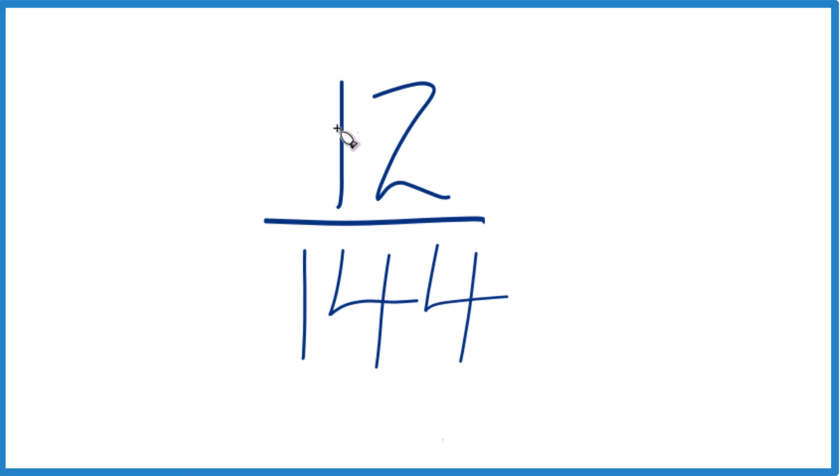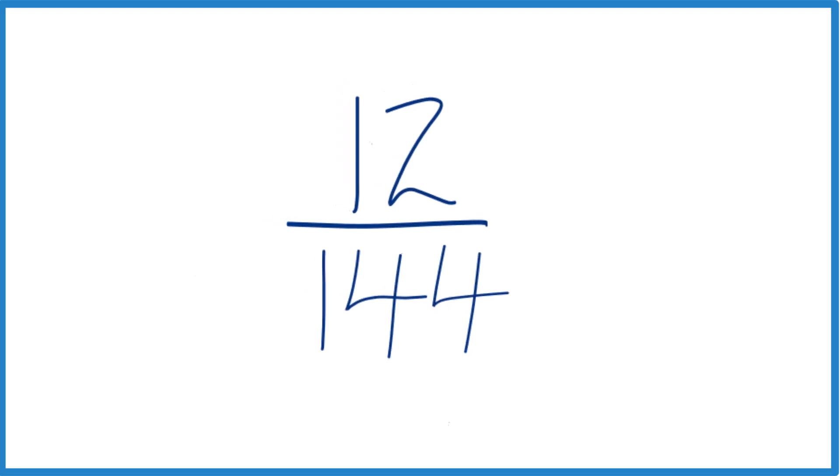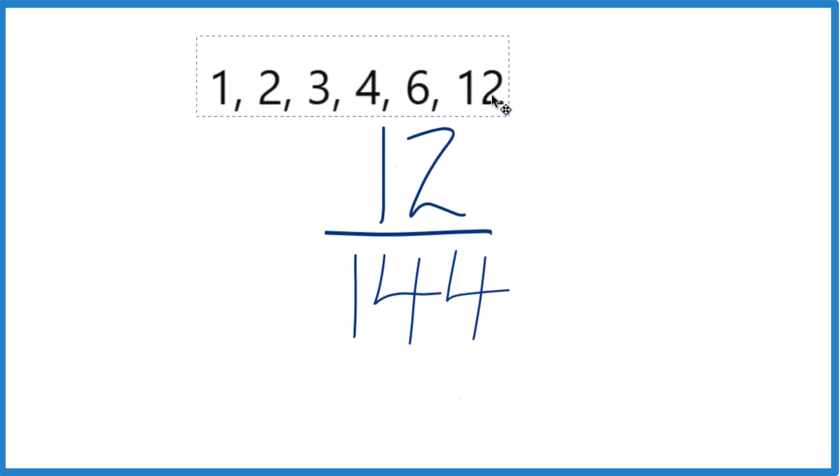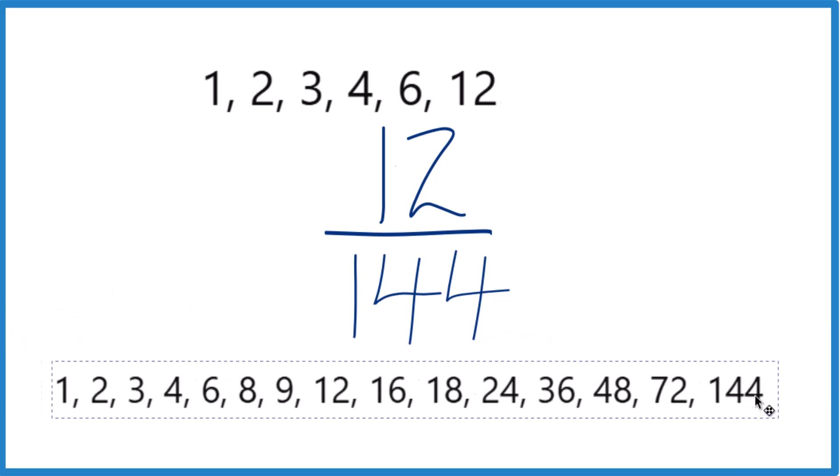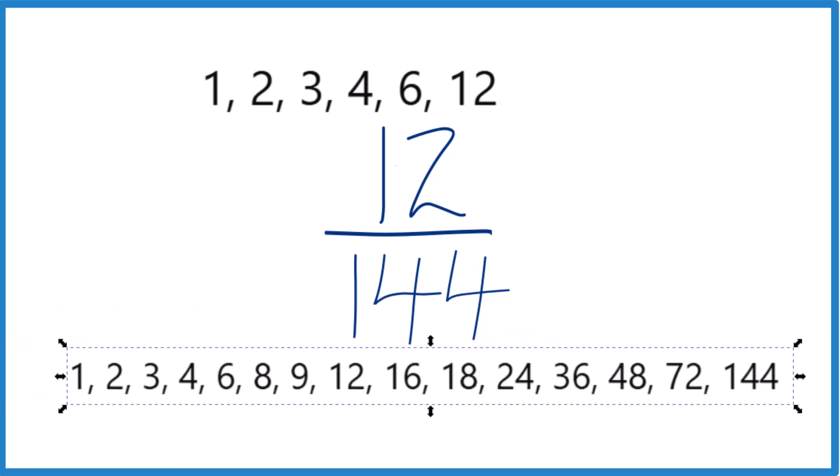What we want to do is get this down to lowest terms, its simplest form. So we need to find a common factor, something that goes into 12 and 144. Here are the factors for 12 right here, and in 144 there are a lot of factors. Let's see what they have in common.